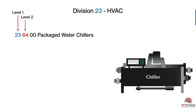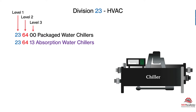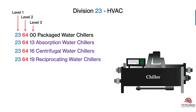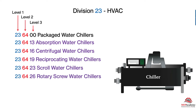Level 2 — the second set of numbers — is 64, and that's where you'll find Packaged Water Chillers. But we all know there's more than one type of Packaged Water Chiller, so that's where Level 3 comes in to define the type. In this case: Absorption, Centrifugal, Reciprocating, Scroll, and Rotary Screw. So Level 1 is your Division — HVAC. Level 2 is Packaged Water Chillers. And Level 3 is more definitive because there's more than one type.